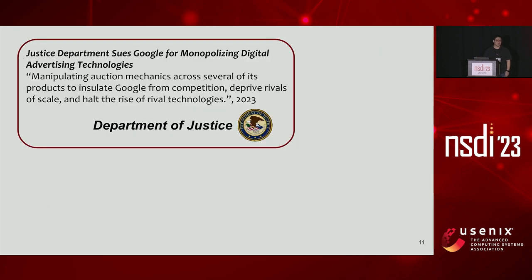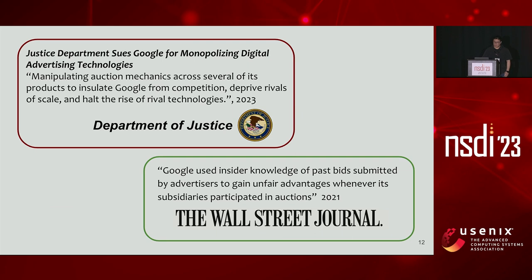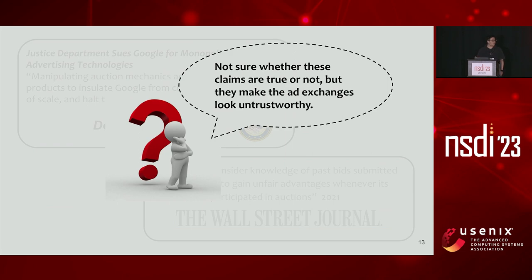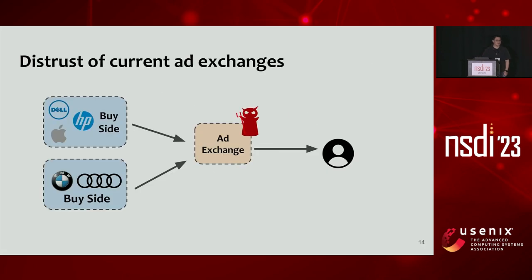This lack of transparency brings serious issues to ad exchange companies. For example, earlier this year the Justice Department sued Google for manipulating auction mechanisms. Back in 2021, the Wall Street Journal reported that Google used insider knowledge of past bids submitted by advertisers to gain unfair advantages. As customers, parties in the system, or regulators, we cannot say for sure whether these claims are true, which makes us question whether ad exchange companies are truly trustworthy.